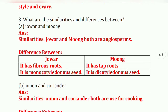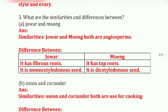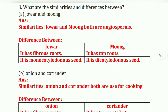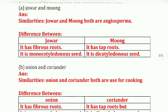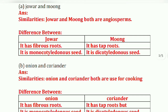Third question: what are the similarities and differences between the following? First, jowar and moong. Similarities: both jowar and moong are angiosperms. Differences: jowar has a fibrous root while moong has a tap root. Jowar is a monocotyledonous seed and moong is a dicotyledonous seed.